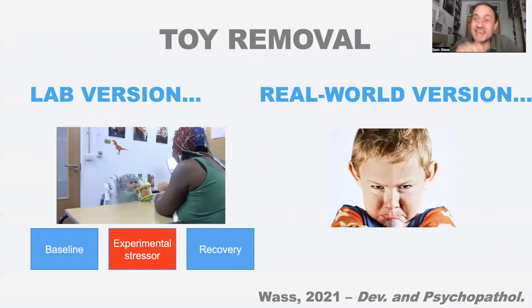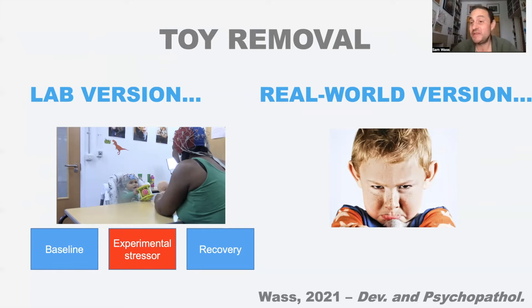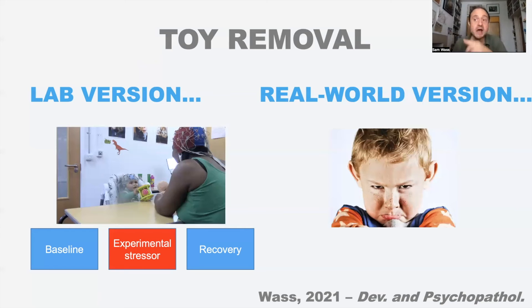To start, I want you to think about the differences between the lab version of the toy removal task and the same thing happening in the real world. In the lab version it's two minutes of baseline, then a stopwatch, two minutes of toy removal, then two minutes of giving it back. Compare that to what happens with my three-year-old Freddy. When you're out shopping, it's very stimulating - lots of unusual noises, lots of people around. The child feels out of control being dragged from shop to shop, which increases their stress.